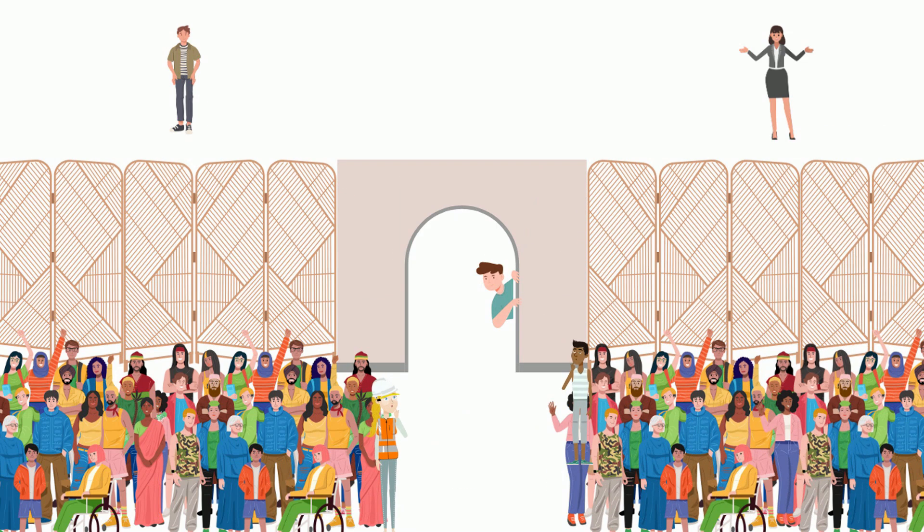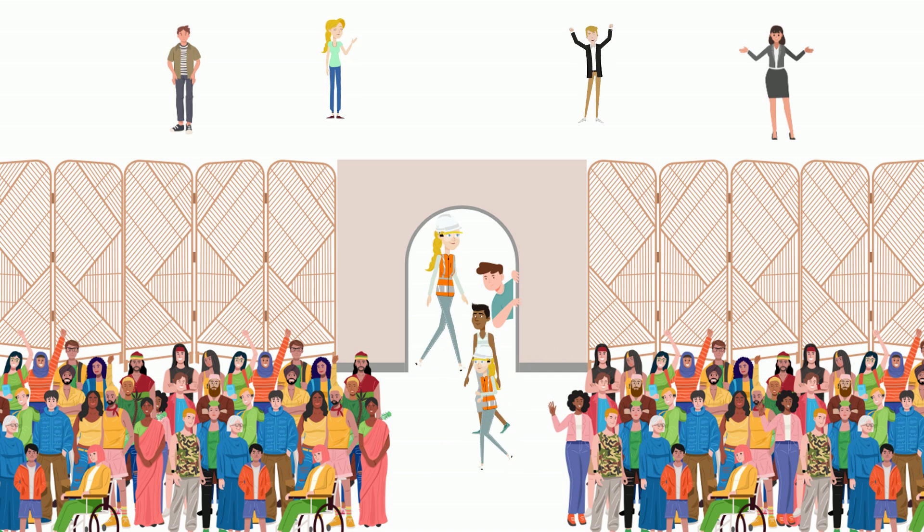Imagine a room with a special divider down the middle. The divider has a door that only certain items can fit through. Now on one side of the room, it's packed, super crowded. On the other side, there's plenty of space. So what happens? The people from the crowded side will start to move through the door to get to the less crowded side. That's osmosis.